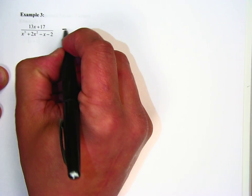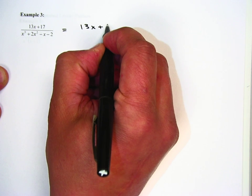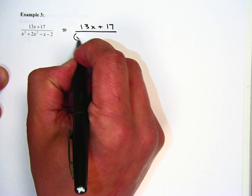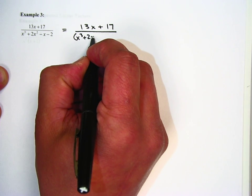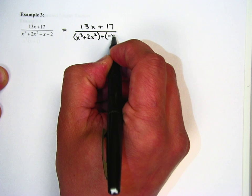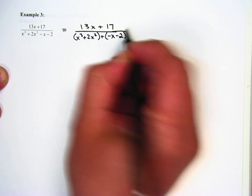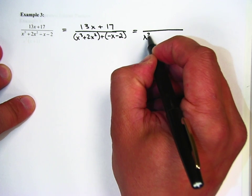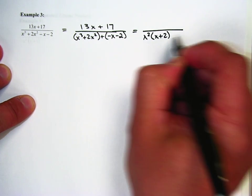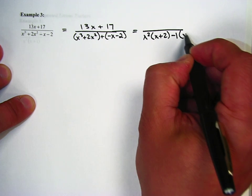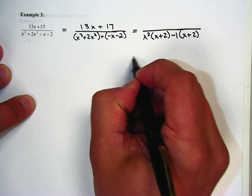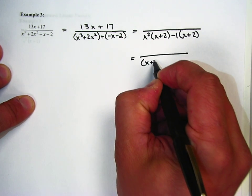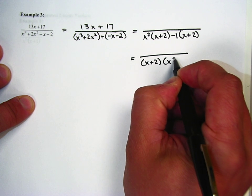First step, factor that denominator. We can factor it by grouping. I'll actually just group it up here and we'll say x cubed plus 2x squared. We'll group the negative x minus 2. That's going to be an x squared common there. So we're going to take an x squared out, leaving us with x plus 2. Take a negative 1 out, gives us an x plus 2. I'm just not even going to write the numerator because we've got to keep going.